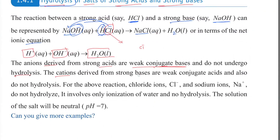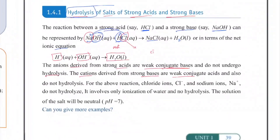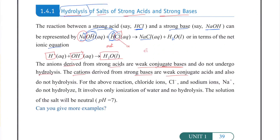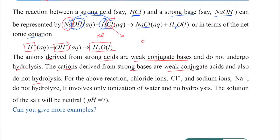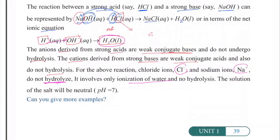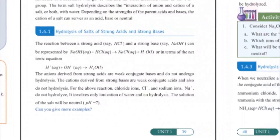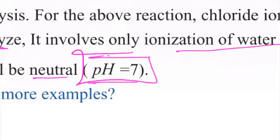Cations derived from strong bases are weak conjugate acids and also do not undergo hydrolysis. This involves only ionization of water into hydrogen and hydroxide. The solution of this type of salt is neutral — pH is neutral. So strong acid plus strong base gives a neutral solution.